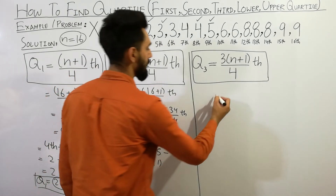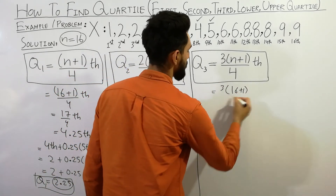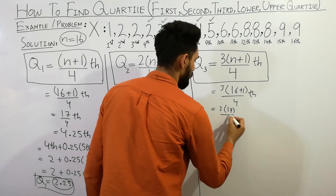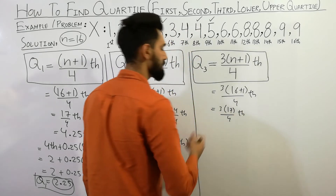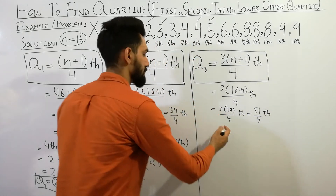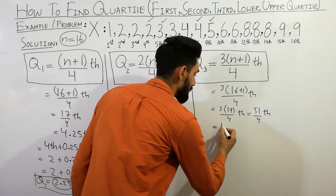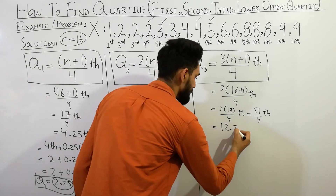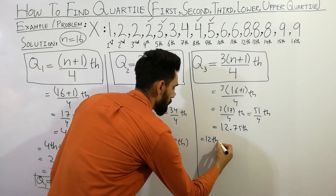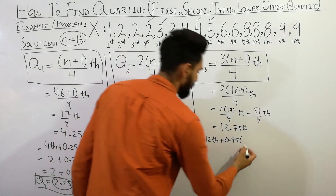And next, for Q3, you can easily calculate: 3 times (16 + 1) divided by 4, which is 3 times 17 over 4, giving 51 divided by 4. The next term will be the 12th term.